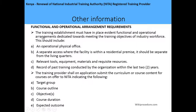Other information concerns Functional and Operational Arrangement Requirements. These state that the training establishment must have evident functional and operational arrangements dedicated to meeting the training objectives of the industry workforce. These include an operational physical office, separate access where the facility is within residential premises — it should be separate from the living quarters — and relevant tools, equipment, and material.